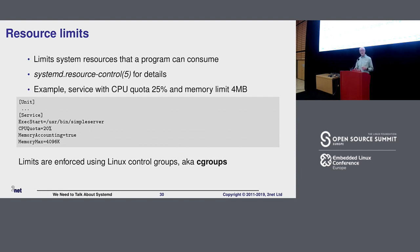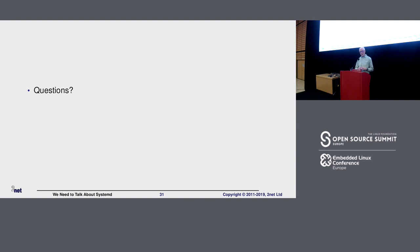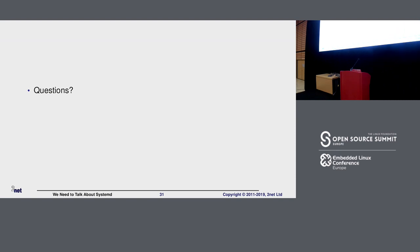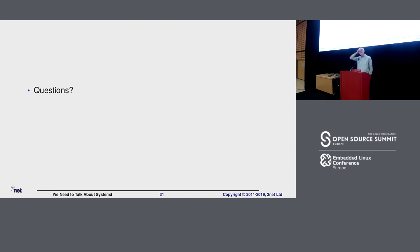And that is basically it — a quick run through SystemD and fancy stuff you can do with SystemD. Any questions? About the watchdog: do you know if it's possible to implement it without needing to have specific SystemD-related code in your application? In order for your service to respond to the watchdog prompts coming from SystemD, you've got to write some code to do that. It's only a little bit of code.